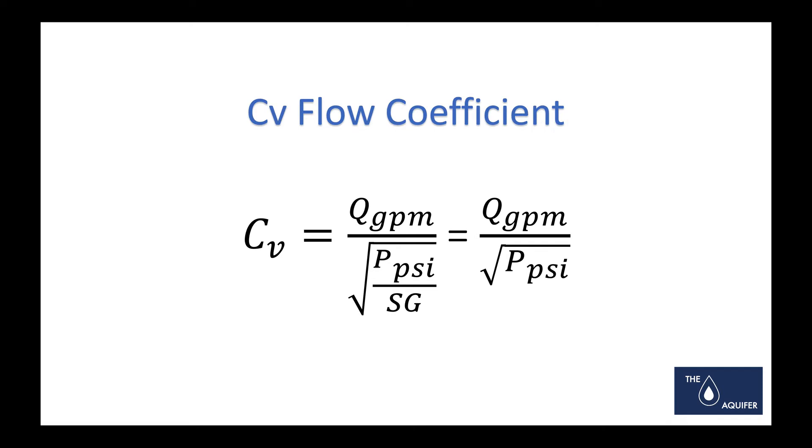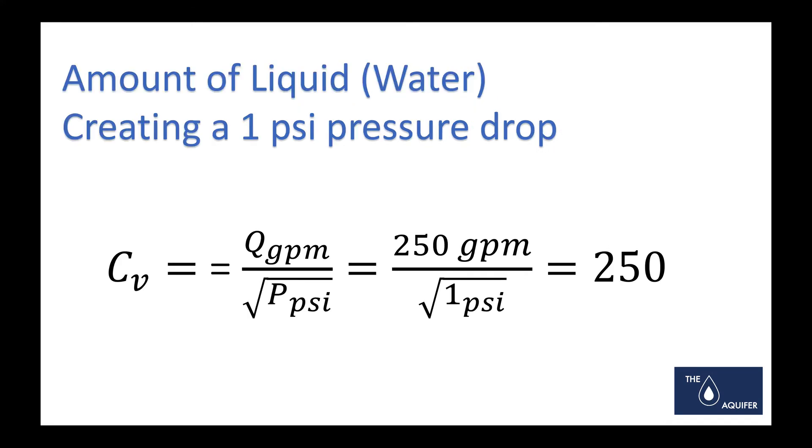The Cv value is basically a relationship between flow rate and pressure drop. We're going to be working in terms of water, so as you can see, the specific gravity will just be one, so we can ignore that in our calculation. Typically you're going to get a Cv value—this would be an example of one you might receive—that would say, okay, it's 250. Well, that means for 250 gallons a minute, there's going to be one psi of pressure drop. That's basically what the Cv value is giving you.